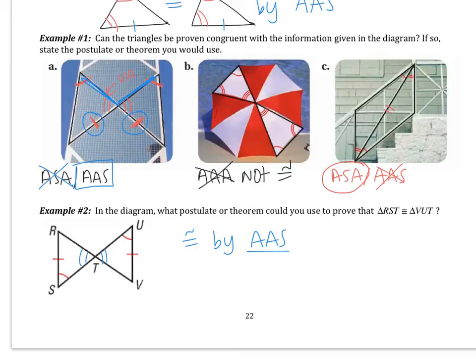Hopefully you got that right. If not, you'll have a chance to practice more tomorrow. You're going to practice identifying which triangles are congruent using which theorem, and also write some proofs using ASA and AAS, which is what we're going to do next.